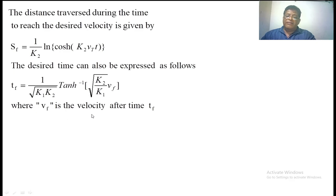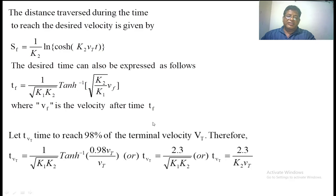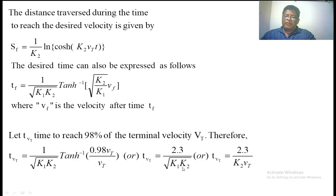The time to reach the desired velocity is given by T_f = (1/(K2·V_T)) · cosh⁻¹(e^(K2·S)). If you want to find how much time is taken by the vehicle to reach 90% of the terminal velocity, we substitute 0.9·V_T into the equation and get: t = (1/sqrt(K1·K2)) · tanh⁻¹(0.9·V_T / V_T). The V_T terms cancel, and finally we get t = 2.3 / sqrt(K1·K2), or equivalently 2.3 / (K2·V_T).